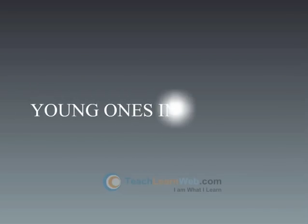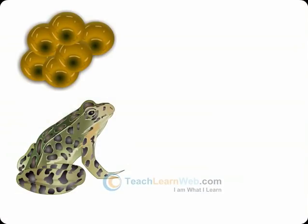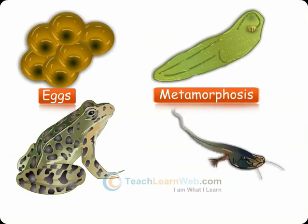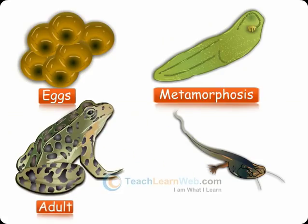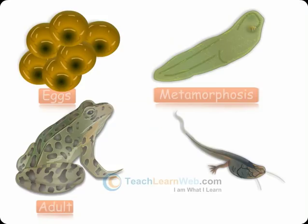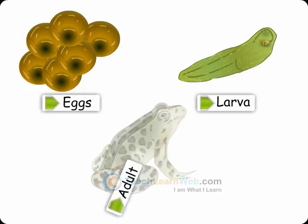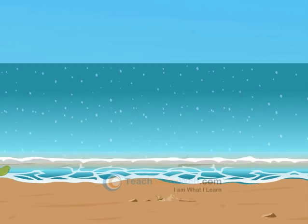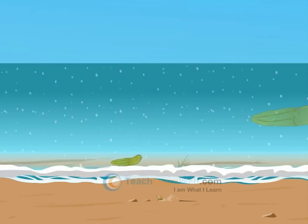Young Ones into Adult. In a frog, the individuals which hatch out from the egg undergo a process of metamorphosis by which they are transformed into an adult. The different stages observed in the life cycle of a frog are egg, larva, and adult. The larval stage is called a tadpole, which is capable of jumping and swimming.